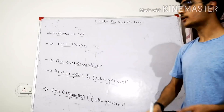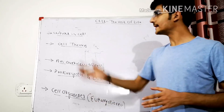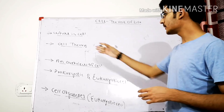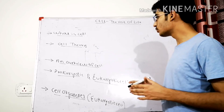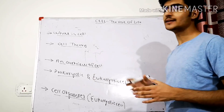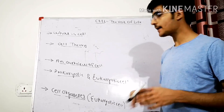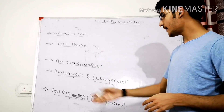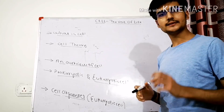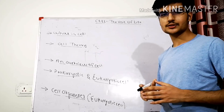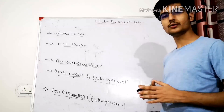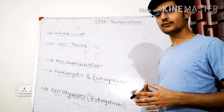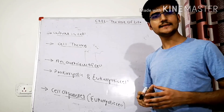So in this chapter we are going to cover these topics: what is a cell, cell theory, an overview of cell, then we will study in detail about prokaryotic and eukaryotic cells, and the cell organelles — specialized structures which are found in eukaryotic cells. So let us first start with what is a cell.